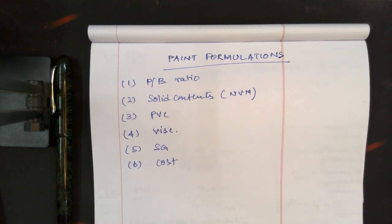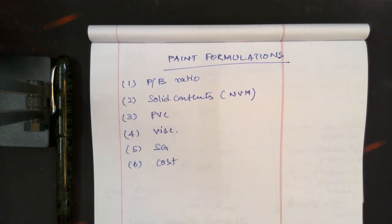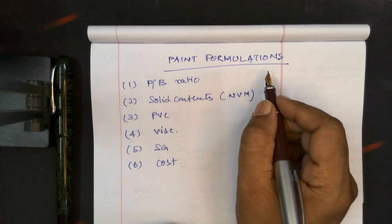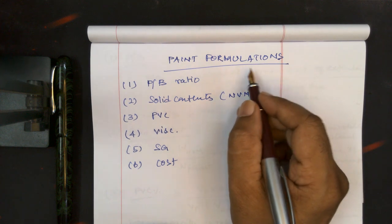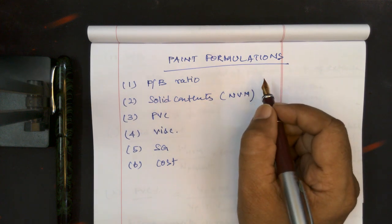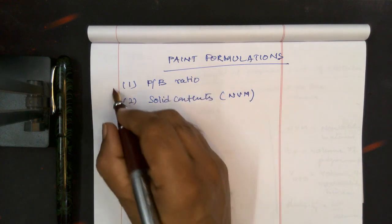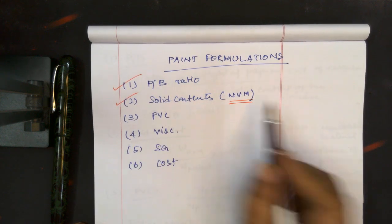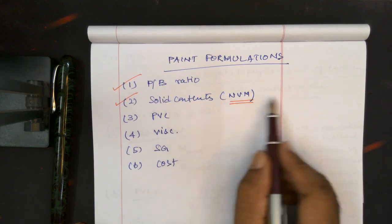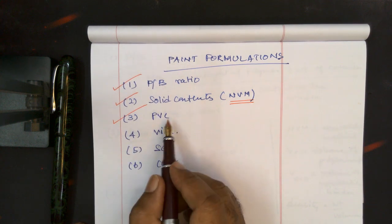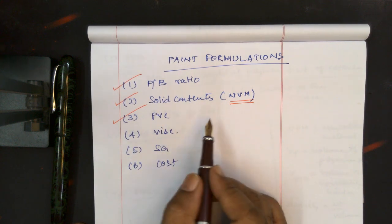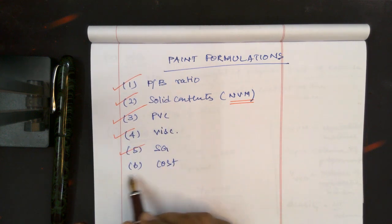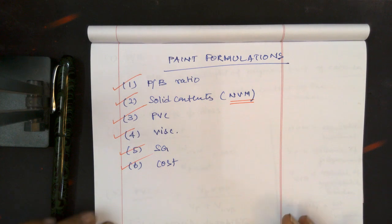Now we have come to a very crucial point of formulating paints and what are the important parameters to be considered in paint formulation. Pigment binder ratio is very important, then solid content, also called non-volatile material, given as percentage. Then pigment volume concentration and CPVC, critical pigment volume concentration. We should know about viscosity, specific gravity, and then work out the costs of our formulated product.